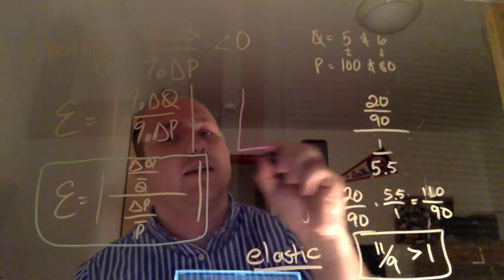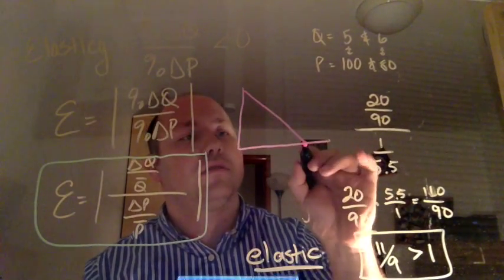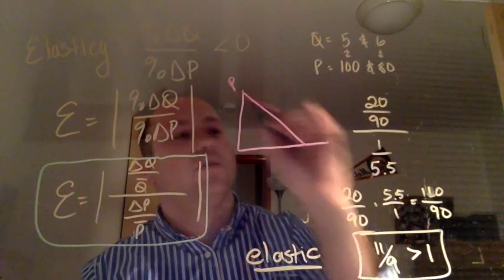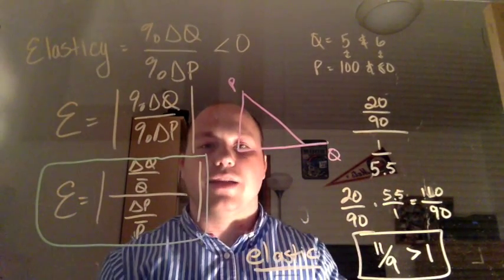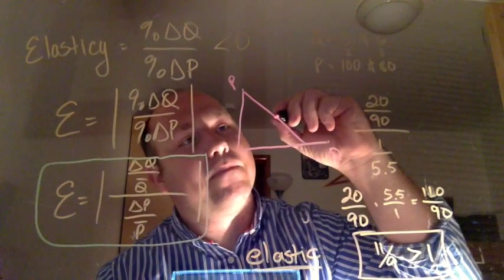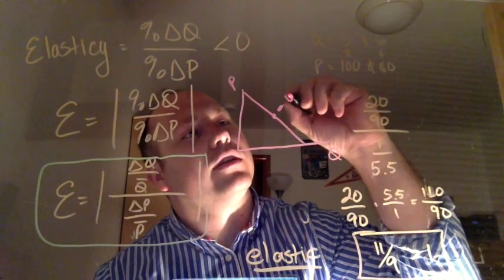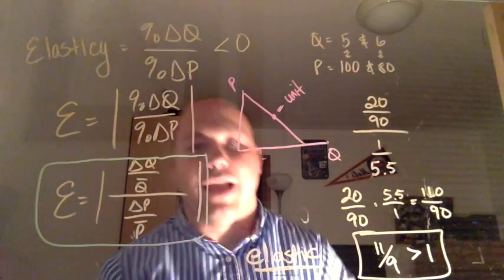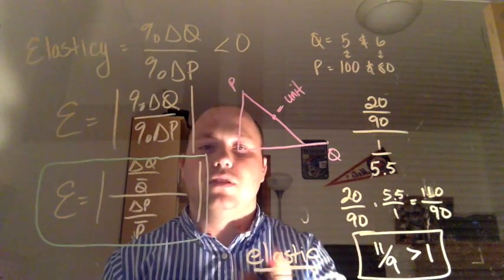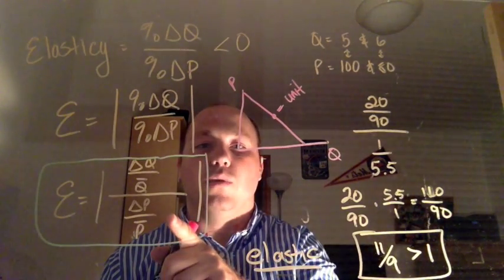So say we have our straight line demand curve, right? Where we have price on the y-axis, quantity on the x-axis. Right in the middle is what's known as unit elastic, right? So that is where this elasticity is equal to 1, right?